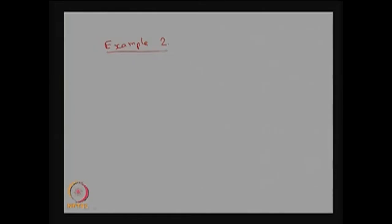Here I am going to discuss a reducible Markov chain. Here we have only two states. The probability of the system moving from state 0 to 0 in the next step is 1, and the system coming from state 1 to 0 in one step has probability 1. This is the state transition diagram of a time-homogeneous discrete-time Markov chain. I am going to write the one-step transition probability matrix for this state transition diagram.